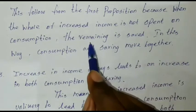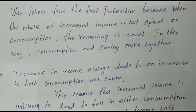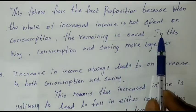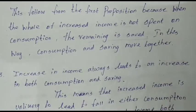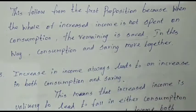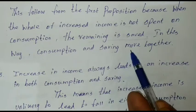The remaining amount is saved. In this way, consumption and savings move together. When income increases, the consumption and savings also increase together. This is the second proportion — increased income is divided between consumption and savings.